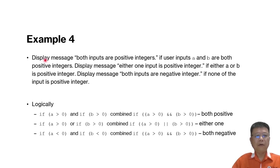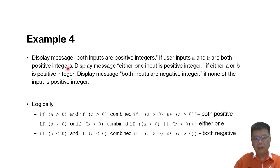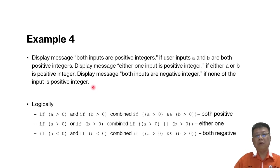Now we go to example four. We write a program to display 'both inputs are positive integers' if A and B are both positive; 'either one input is positive integer' if either A or B is positive; and 'both inputs are negative integers' if neither input is positive. We compare A and B and output the required message.